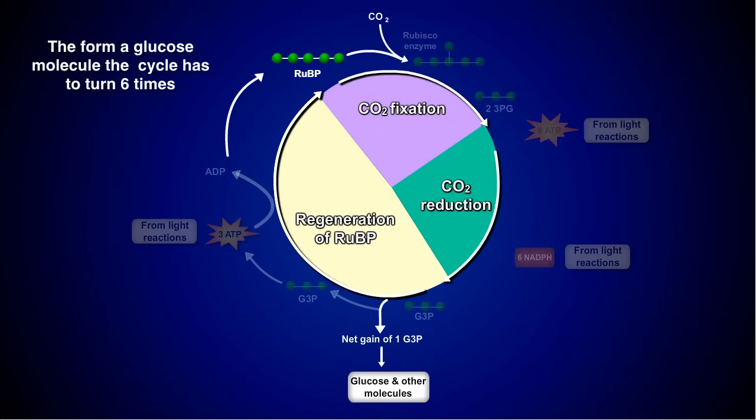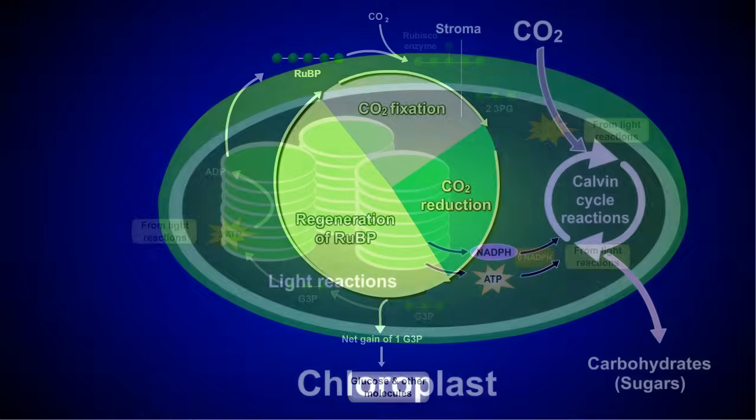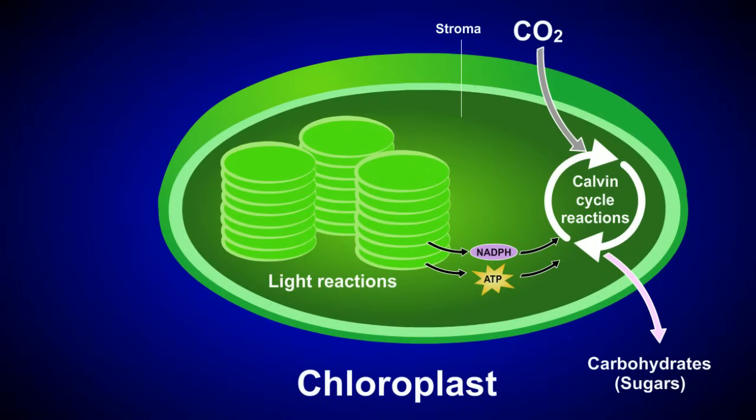To form a glucose molecule, the cycle actually has to turn six times, because each turn of the cycle adds only one carbon atom from the incoming carbon dioxide. It's important to remember that the Calvin cycle is dependent on the light reactions to provide NADPH and ATP, which in turn provide the electrons and energy needed to form carbohydrates.